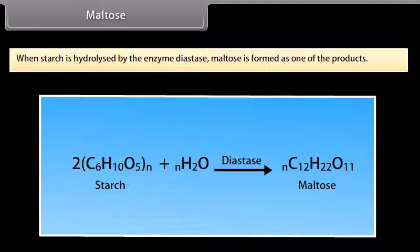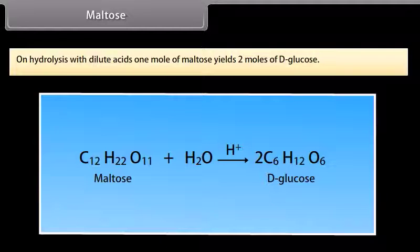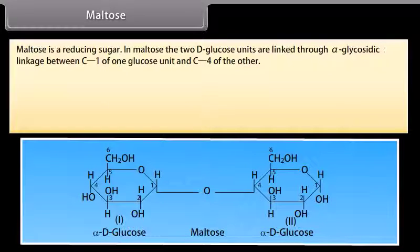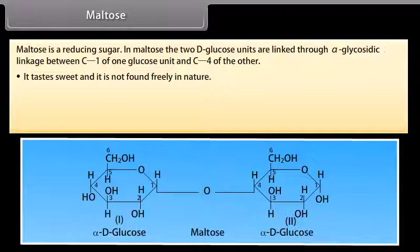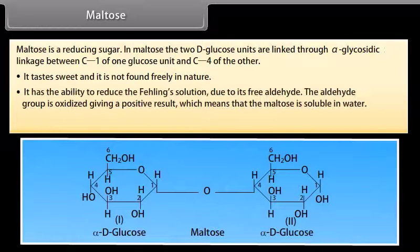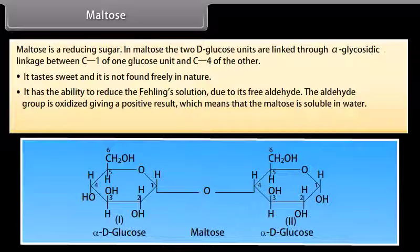When starch is hydrolyzed by the enzyme diastase, maltose is formed as one of the products. On hydrolysis with dilute acids, 1 mole of maltose yields 2 moles of D-glucose. Maltose is a reducing sugar. In maltose, the two D-glucose units are linked through alpha-glycosidic linkage between C1 of one glucose unit and C4 of the other. It tastes sweet and is not found freely in nature. It has the ability to reduce Fehling's solution due to its free aldehyde group. In aqueous solution, it exhibits mutarotation.